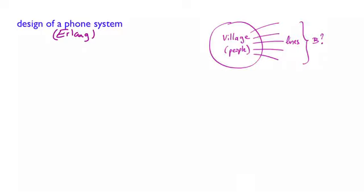So here is a cartoon of the problem, where these are the phone lines, and we need to decide how many of these lines to set up, let's say B.